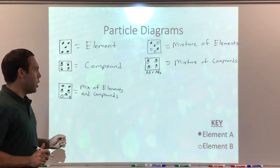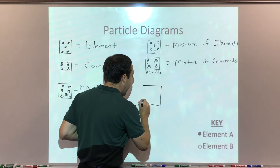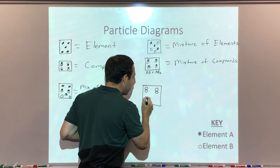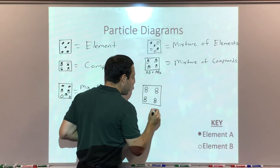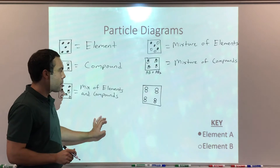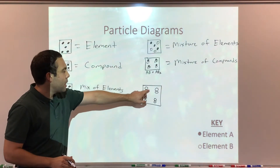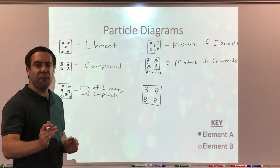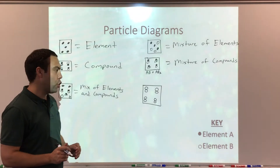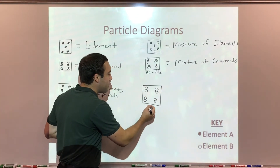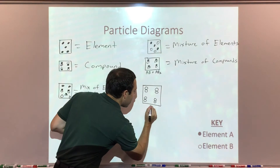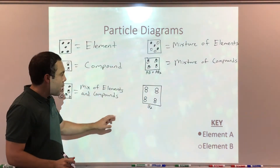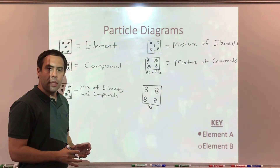And it can get a little bit trickier. In this next box, we have two open circles repeated four times. Some people might be inclined to say this is a compound. But remember, a compound is two or more different elements chemically combined in fixed proportion. Here I have all of the same element — I have B2. So I have two of the same element chemically combined.